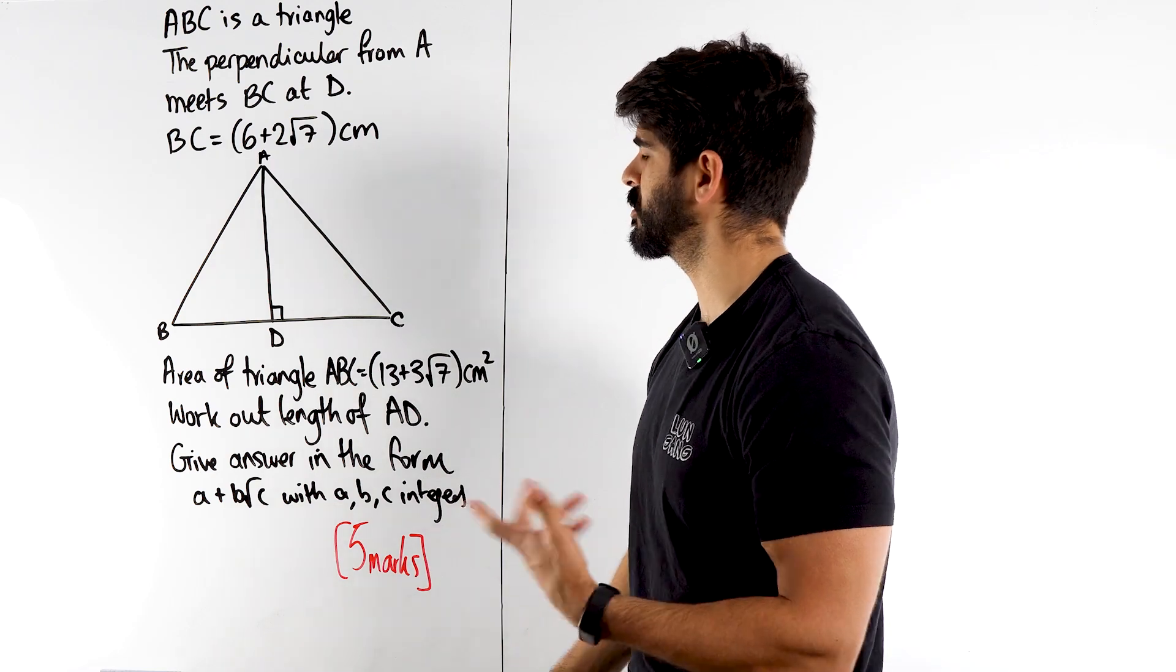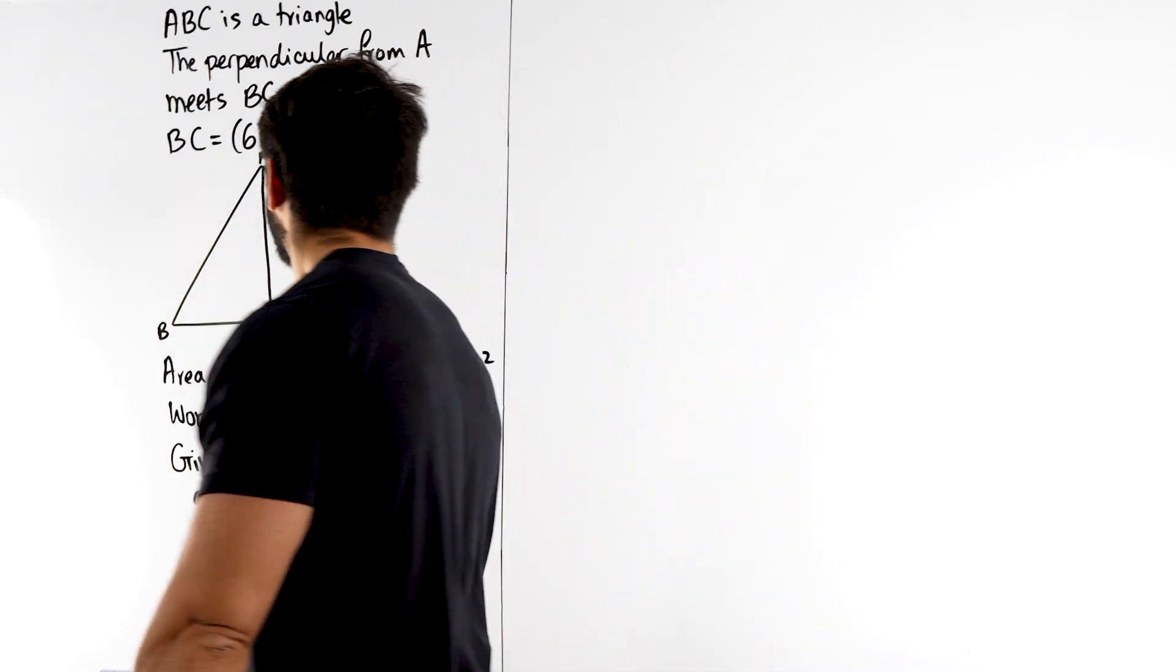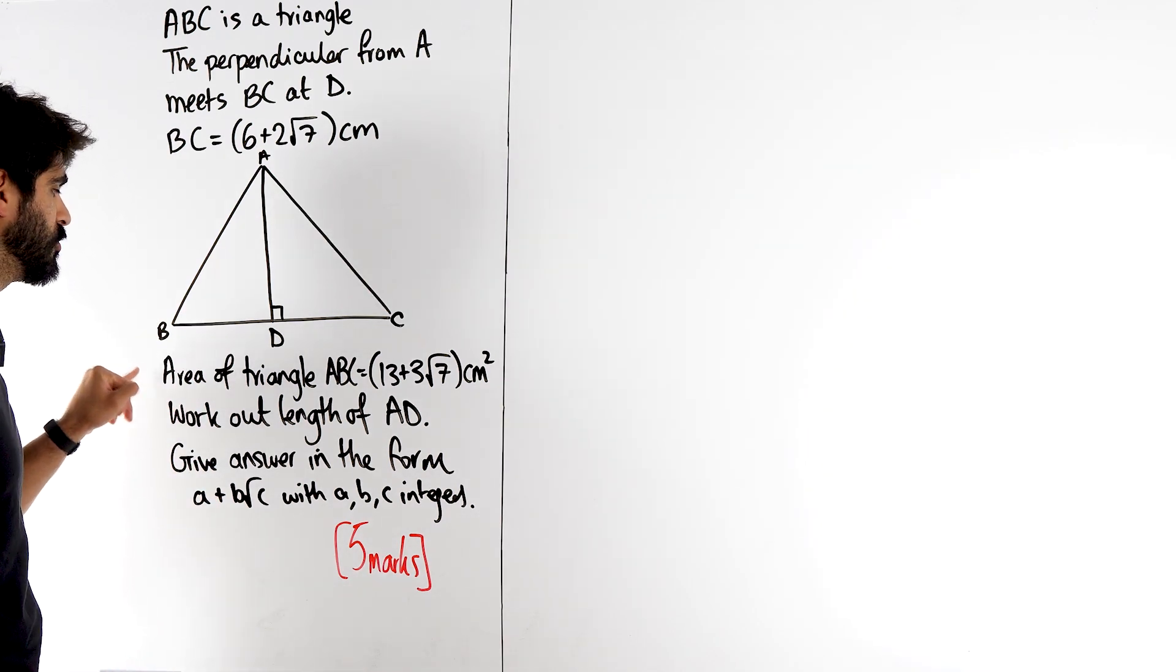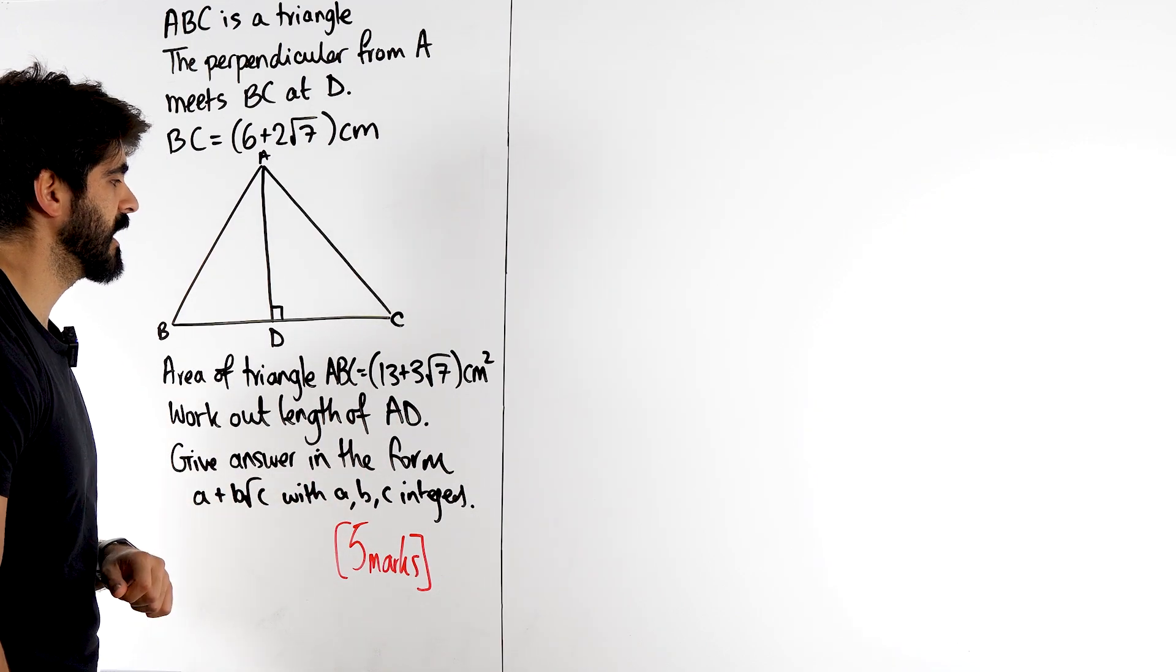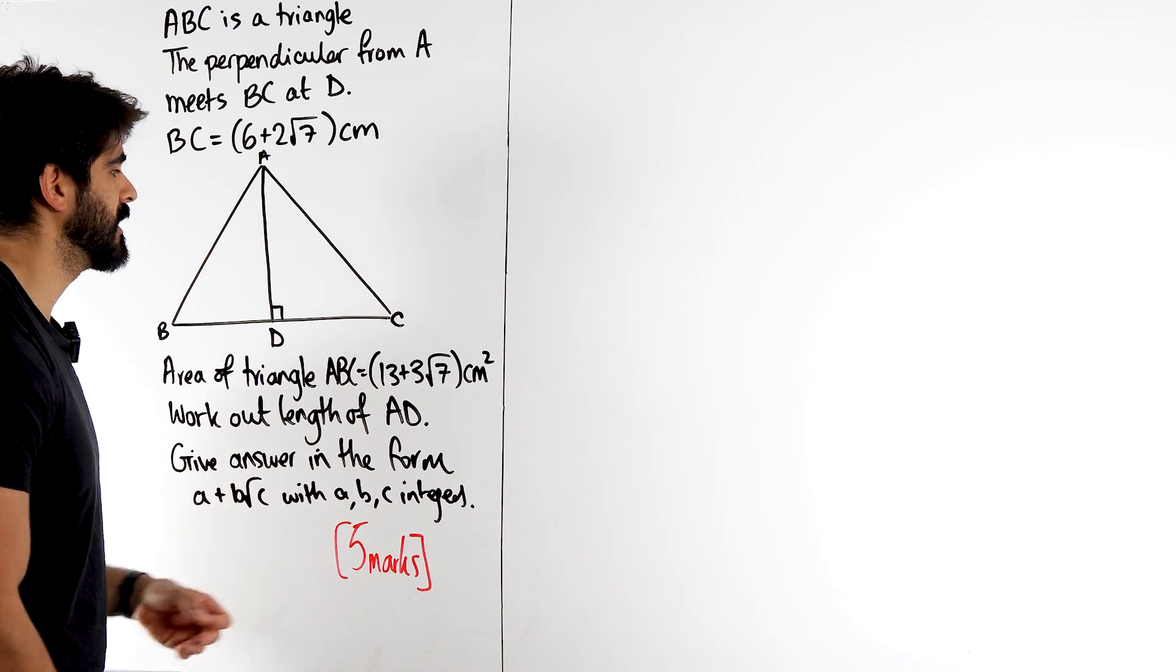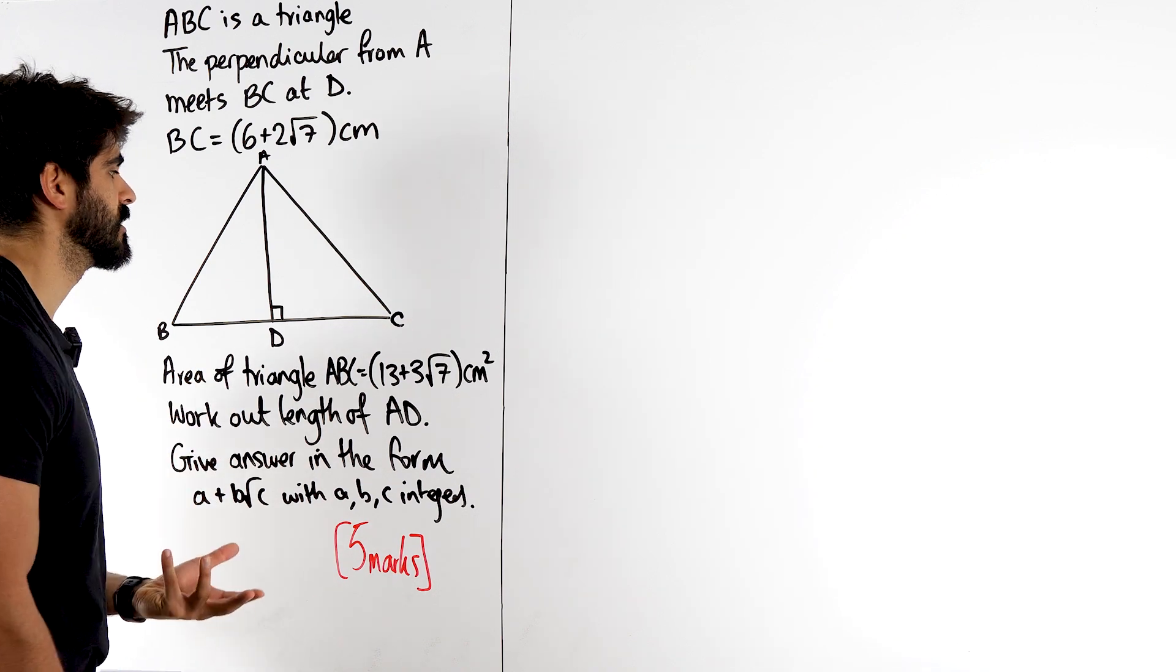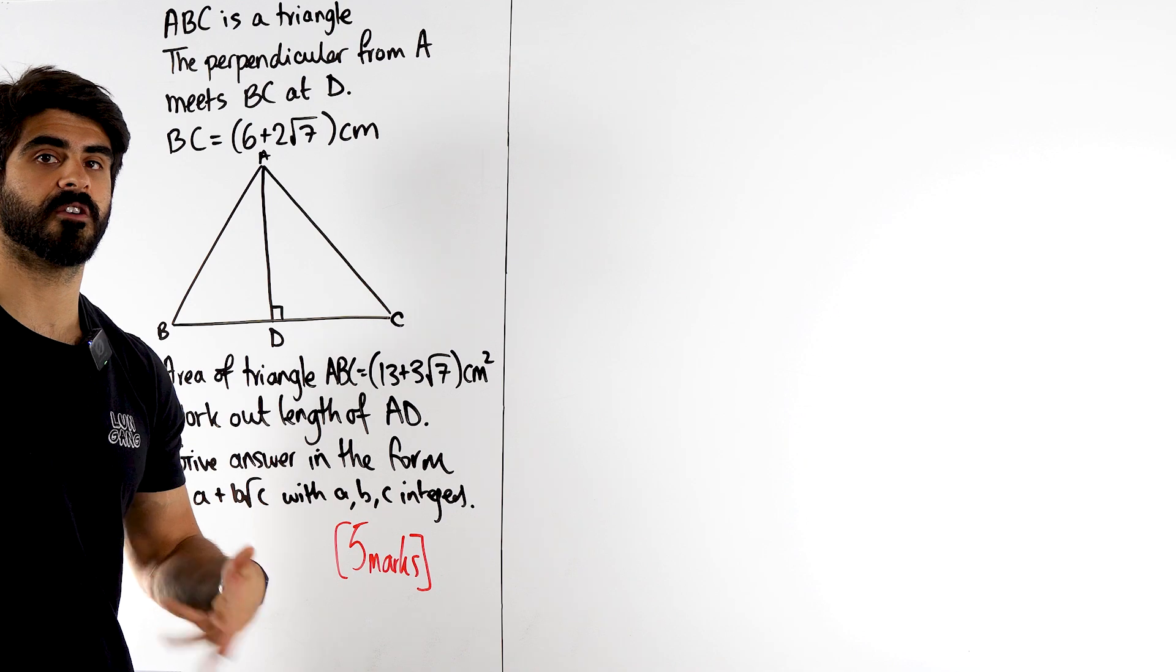Okay, well, actually this question's simpler than you think. So, always look at what they give you. They've told you the area of the triangle is this. Okay, well, how do you find the area of a triangle? Well, base times height. But when we say base times height, it's the base times the perpendicular height. And it doesn't matter what type of triangle it is. As long as you know the base and its vertical height, you can use half base times height.